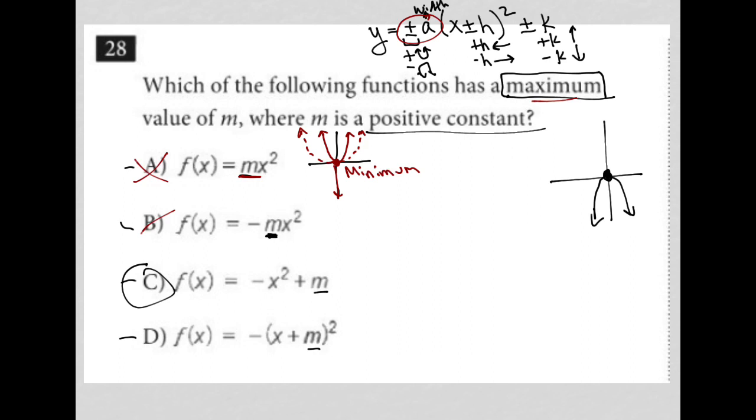However, our m in choice C is in the k position, which, and it's positive, which means if we were to graph this, we take a parabola that started off like this, right? That would be our y equals negative x squared. And then it's shifted upward m units. Let's say that's m units. So our parabola would now look like this, where m is now actually the maximum.